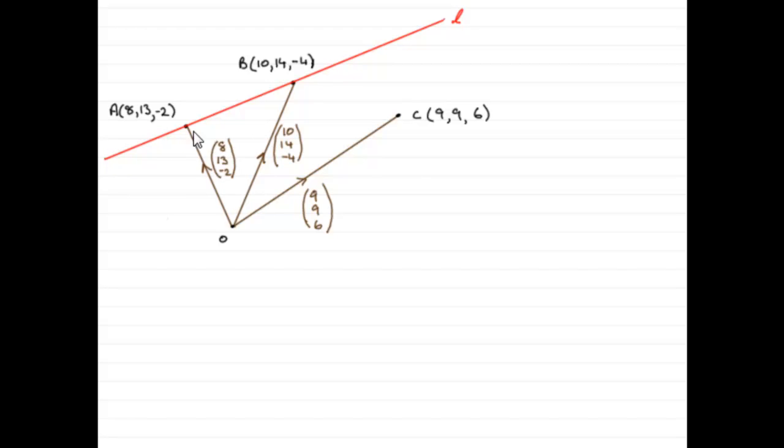Now, we've got three points then, A, B, and C, and relative to the origin, we've got their position vectors, A being at 8, 13, minus 2, B being at 10, 14, minus 4, and C being at 9, 9, 6.